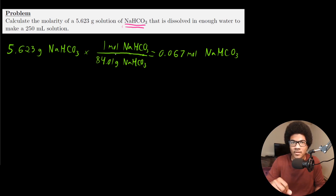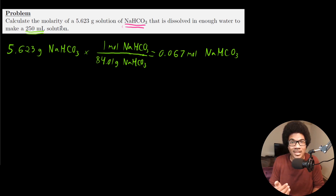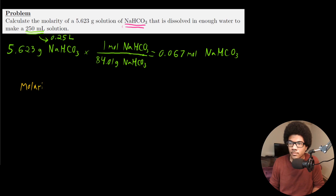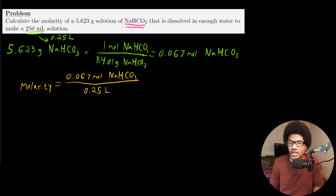Now we just put this into the molarity equation to solve. We also need to convert the volume — since we're given 250 milliliters, for a valid molarity we need liters. So 250 milliliters becomes 0.25 liters of solution. The molarity is equal to 0.067 moles of sodium bicarbonate divided by 0.25 liters. We have moles per liter, so this gives us a 0.27 molar solution of sodium bicarbonate.